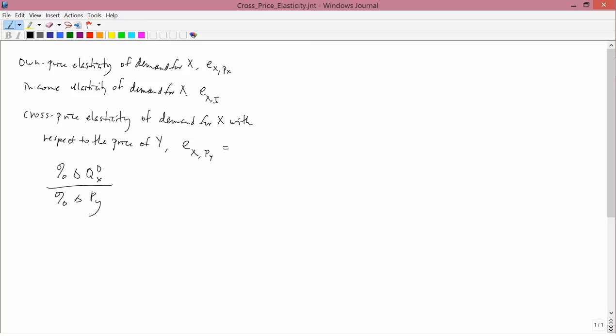That's in contrast to the on-price elasticity, which is how the quantity demanded of apples changes when the price of apples changes. It's useful to connect the idea of cross-price elasticity with complements and substitutes.